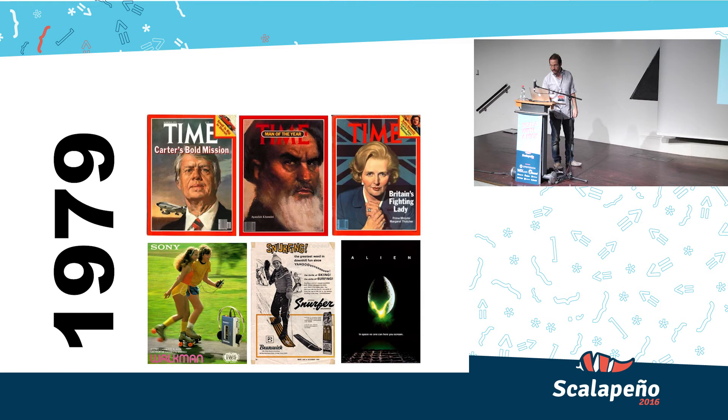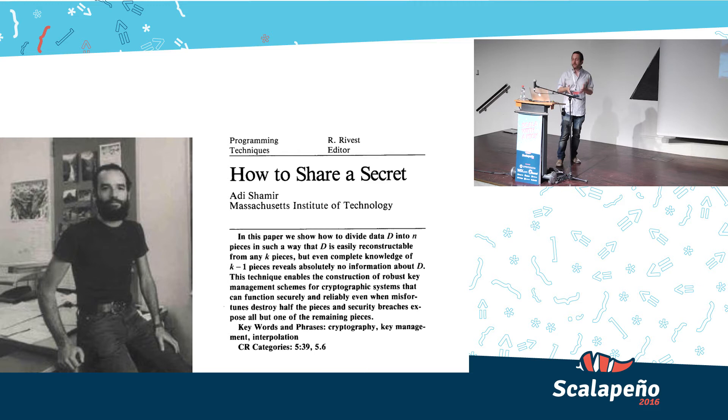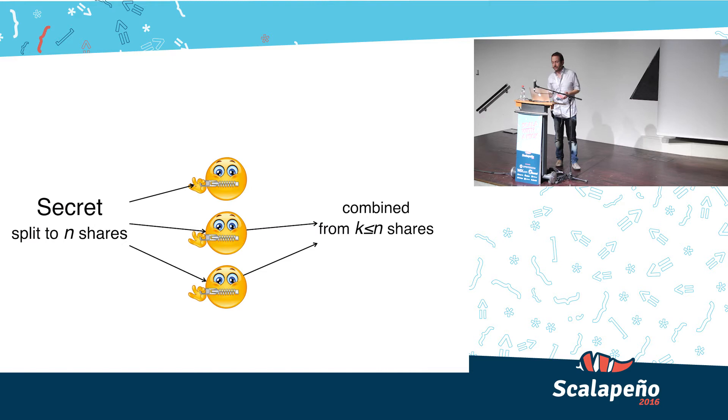And two years prior, Shamir, Rivest, and Adleman came out with the RSA cryptosystem. But, in 1979, Adi Shamir published a very short two-page paper called How to Share a Secret.